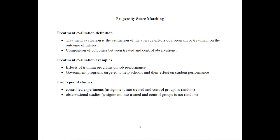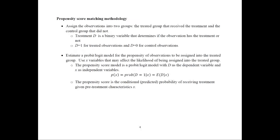In observational studies, assignment into treated and control groups is not random. Certain individuals decided to participate in a program and others did not. Because participants may differ from non-participants, it is hard to directly compare outcomes for the two groups. We first need to match them as much as possible before comparing outcomes.